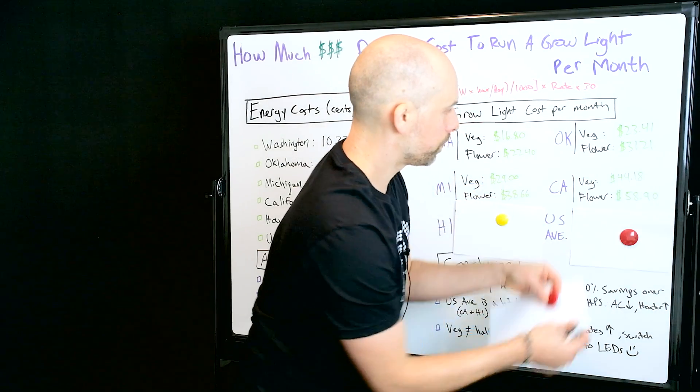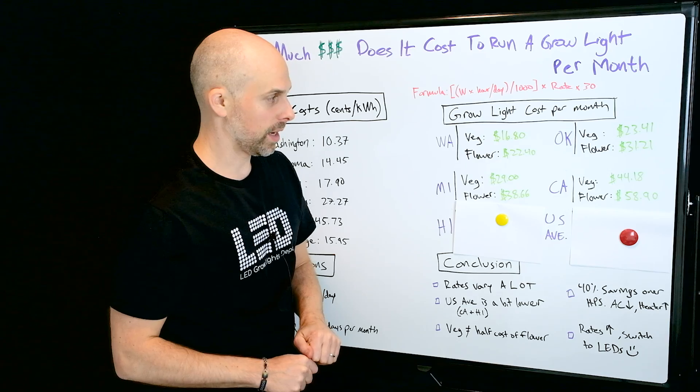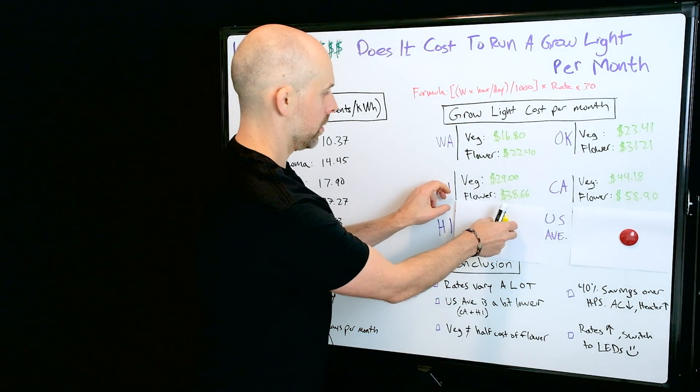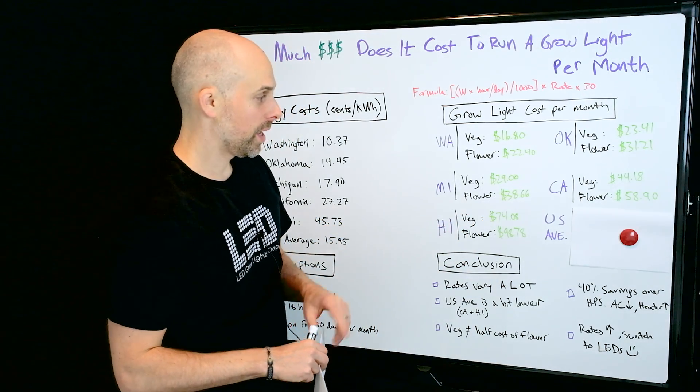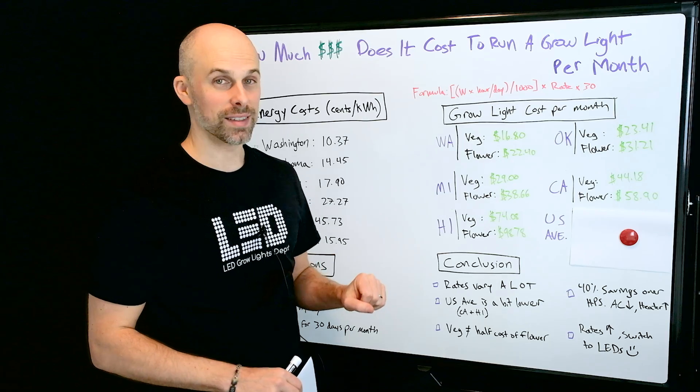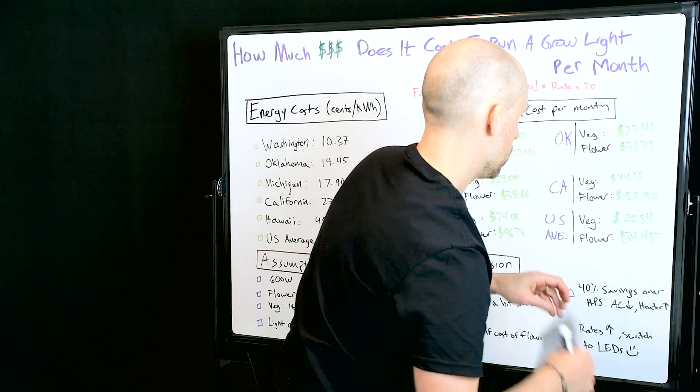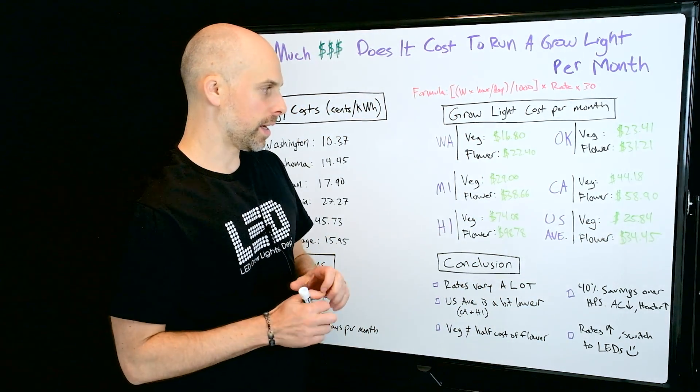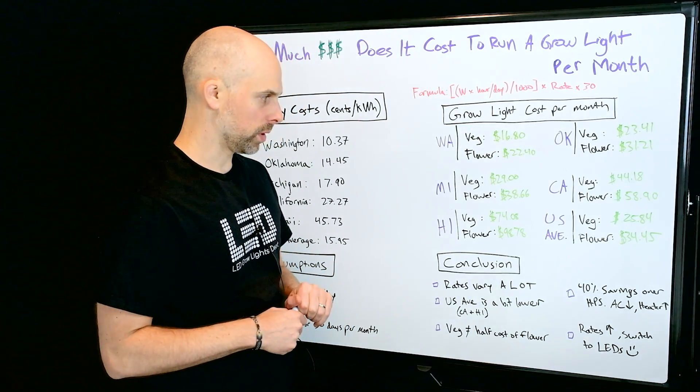California: to veg $44.40 and to flower $58.90. Hawaii, check that out, $74.08 to veg and $98.78 to flower. Whoa. And the US average to veg for the month about $25.84 and to flower right around $34.45.